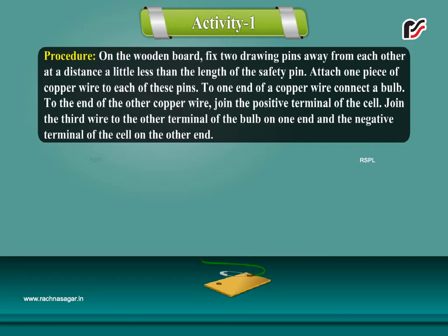Attach one piece of copper wire to each of these pins. To one end of a copper wire, connect a bulb.